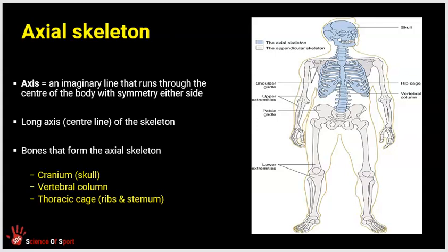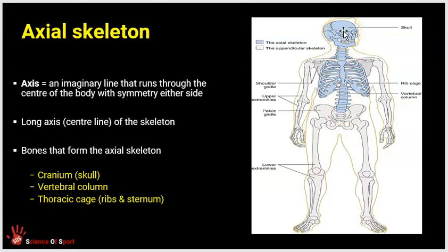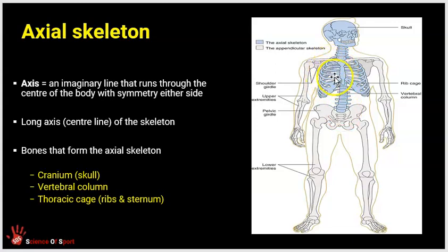An axis is an imaginary line that runs through the center of the body — we tend to rotate around an axis. The axial skeleton becomes this axis to which the limbs attach and move around. As shown in blue on the diagram, the axial skeleton is made up of the cranium, the vertebral column, and our thoracic cage — the combination of ribs and the sternum.